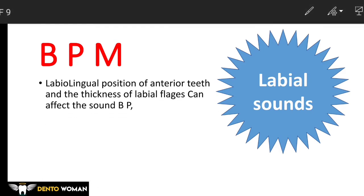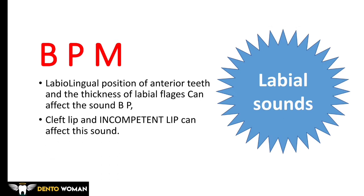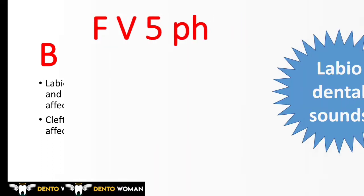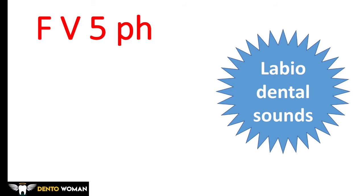B, P, M are labial sounds — some books have also named them bilabial sounds. When upper and lower lips meet together and air pressure is built up behind the lips, which releases with or without a voice sound. Its significance in complete denture: the labiolingual position of anterior teeth and the thickness of the labial flange can affect these sounds. Cleft lip and incompetent lip can also affect this sound.